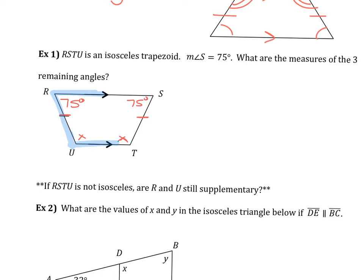These two angles here are same side interiors, because we know those lines are parallel. If the lines are parallel, then those are supplementary. That will be the case in every trapezoid, not just an isosceles trapezoid. That's every trapezoid. So you could just do 180 minus 75. So 105 would be the measure of both of those.